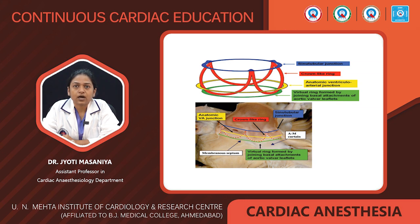The base of the crown is a virtual ring formed by joining the basal attachments of the aortic valve leaflets, and this plane represents the inlet from the LVOT into the aortic root. The top of the crown is formed by the sinotubular junction, representing the outlet of the aortic root into the ascending aorta. The semilunar hinge of the leaflet crosses another ring — the anatomical ventriculoarterial junction. The essence of this arrangement is that the aortic leaflets are supported in a crown-like fashion within the aortic root.